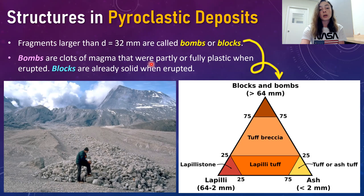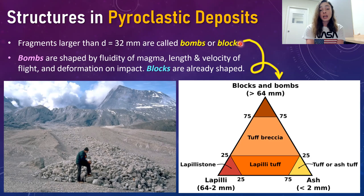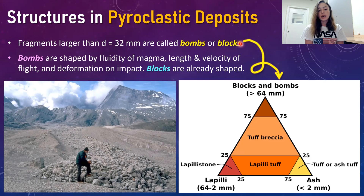Anything with a larger diameter than about 32 millimeters is called a bomb or a block. Bombs are clots of magma that were partially or fully plastic when erupted, whereas blocks were already solid when erupted. The shape of bombs is affected by the fluidity of the magma, the length and velocity of flight, and deformation on impact, whereas blocks were already shaped because they were already solid. If a fragment looks like it was deformed in flight or upon impact, it was probably a bomb.